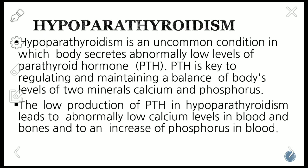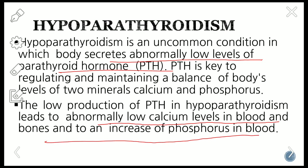The next condition is hypoparathyroidism — an uncommon condition in which the body secretes abnormally low levels of parathyroid hormone. PTH is the key to regulating and maintaining the balance of two minerals: calcium and phosphorus. The low production of PTH in hypoparathyroidism leads to abnormally low calcium levels in the blood and bone, and increased phosphorus in the blood.